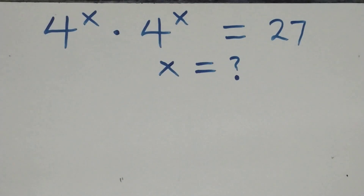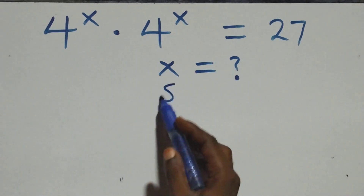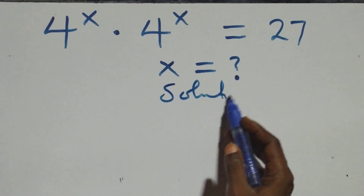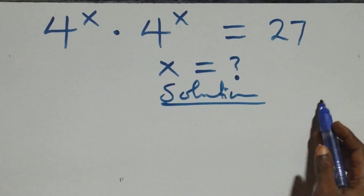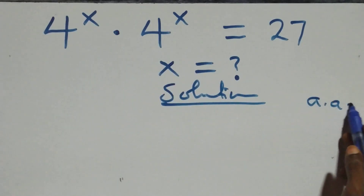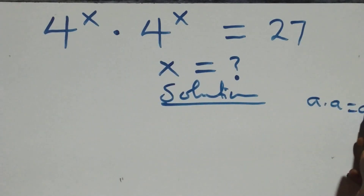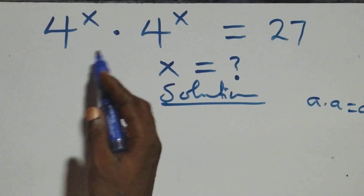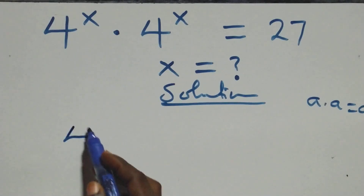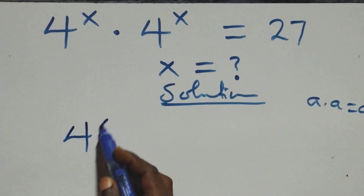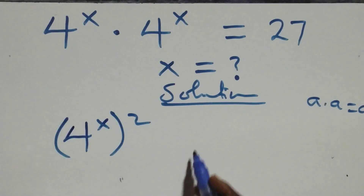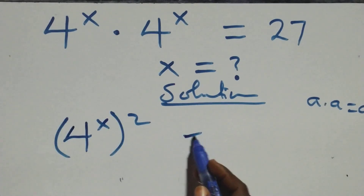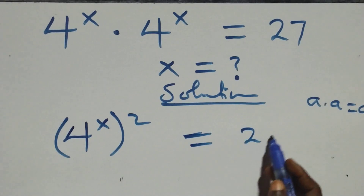Hello, you are welcome. How to solve this nice exponential equation. What we have here: a times a can be written as a squared, and multiplying gives us four raised to the power x squared equals twenty-seven.